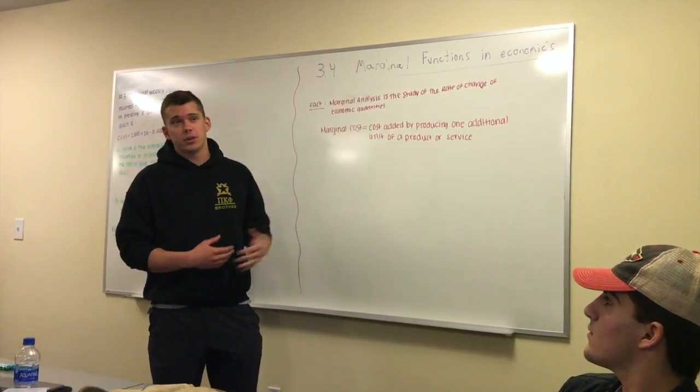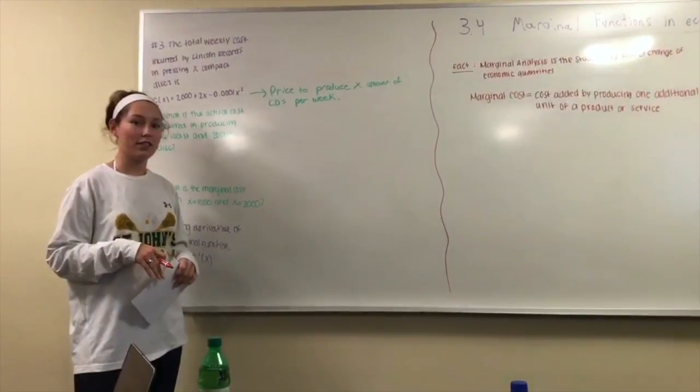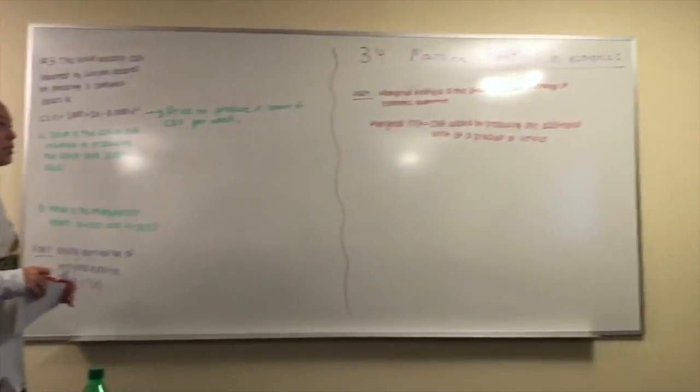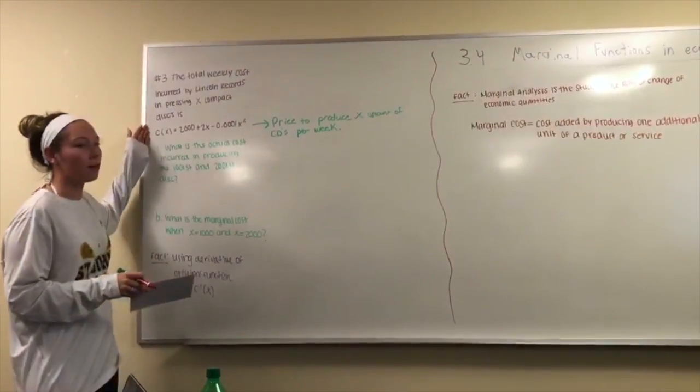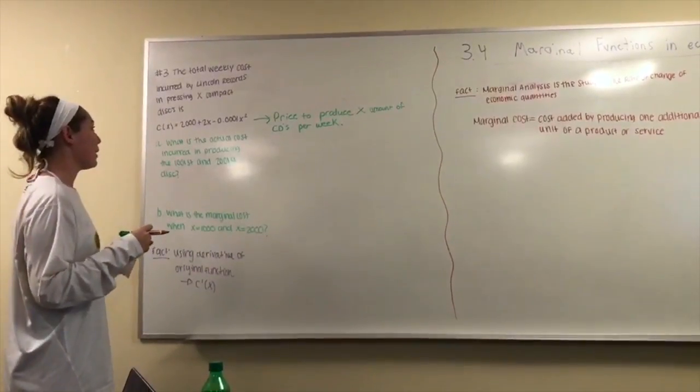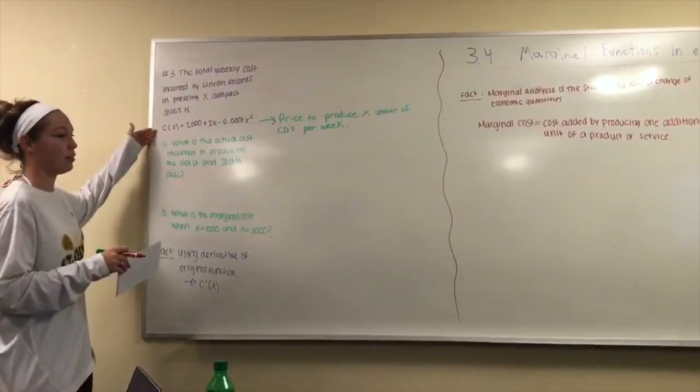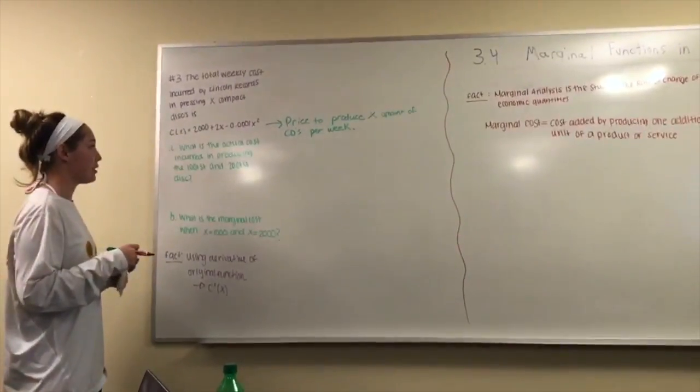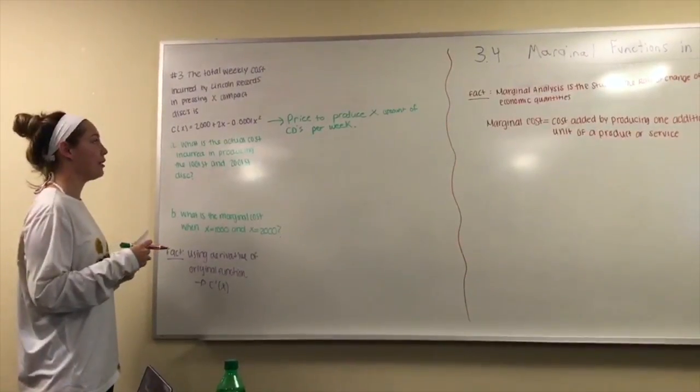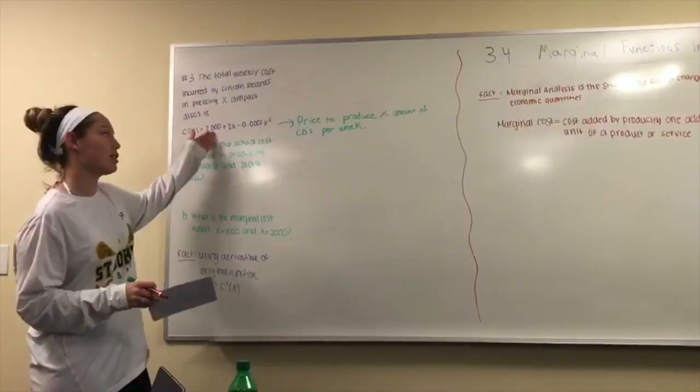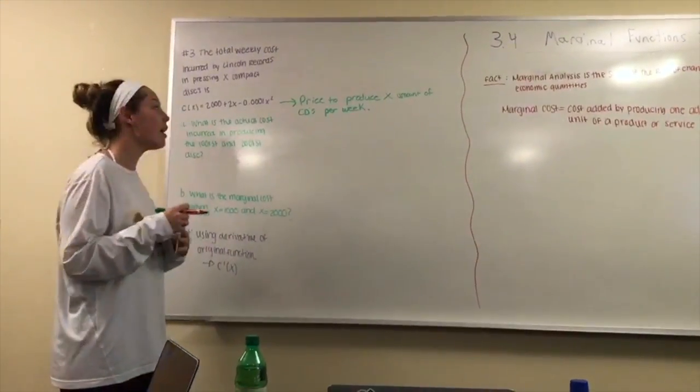Now that we know these two main facts when it comes to marginal functions questions, let's move on to an example. Okay, thanks Luke for introducing us to marginal functions. So we're going to go ahead and move on to question 3 in 3.4 which states the total weekly cost incurred by Lincoln records in pressing X compact discs is given by the equation C(X) = 2,000 + 2X - 0.0001X² and this equation basically represents the price to produce X amount of discs per week.